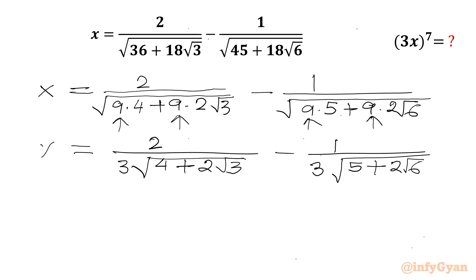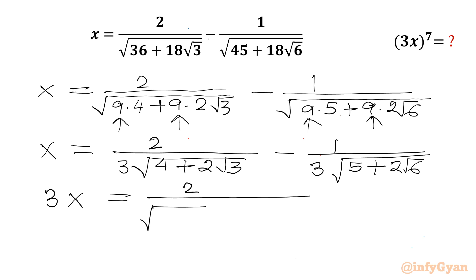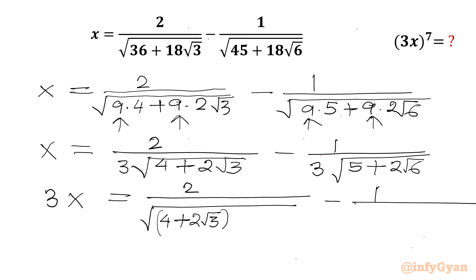Now this is x. We multiply this equation by 3, so 3x will be equal to 2 over √(4 + 2√3) minus 1 over √(5 + 2√6).